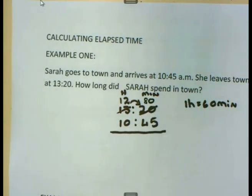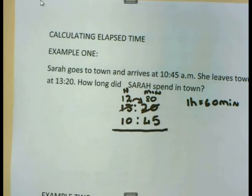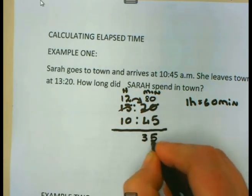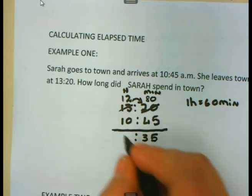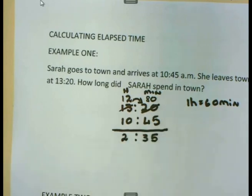And now it is relatively easy to subtract the 45. If I subtract the 45 from the 80, what do I get? Yes, I get 35. And if I subtract the 10 now from the 12, I simply get 2. Meaning that Sarah spent 2 hours and 35 minutes in town.